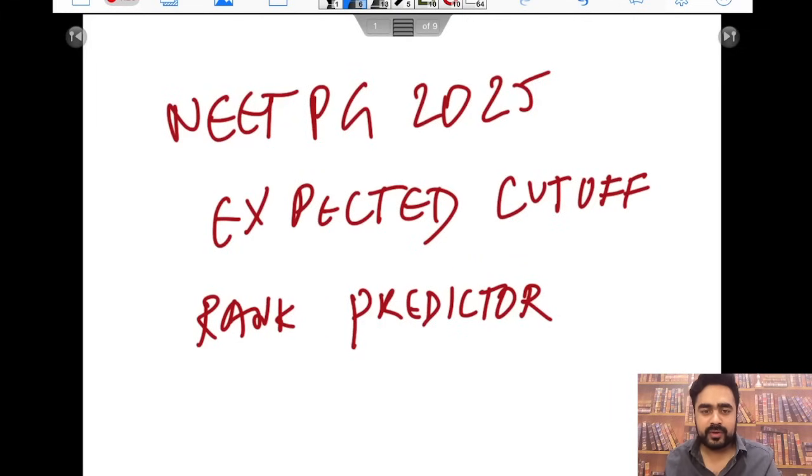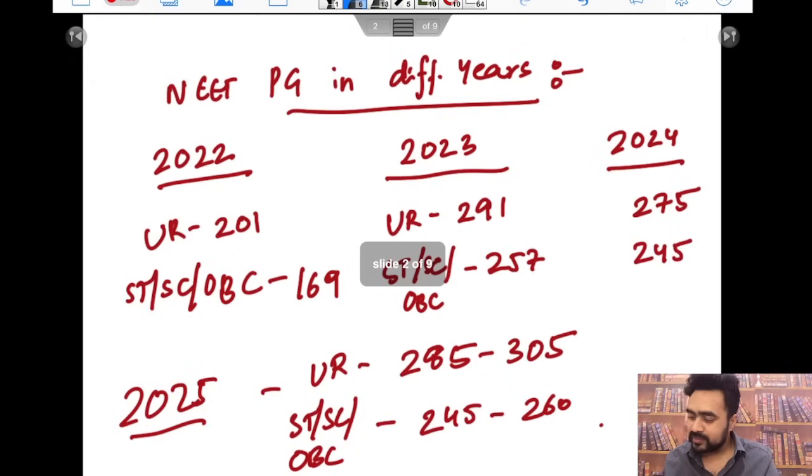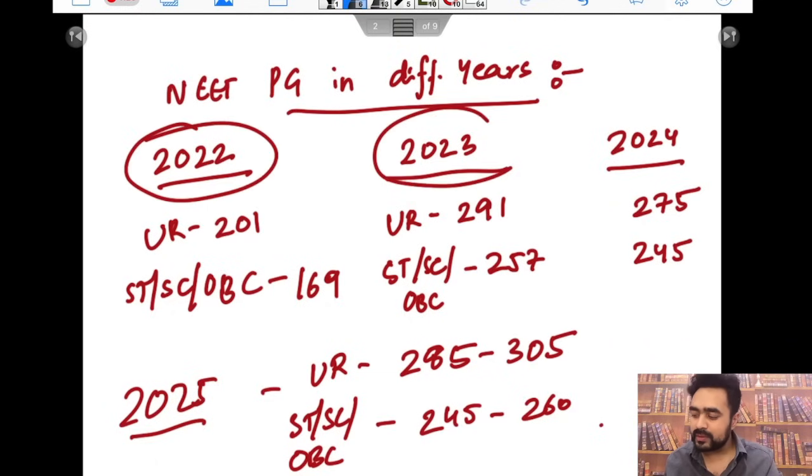Hello everyone, today we will be talking about NEET PG 2025 expected cutoff and the rank predictors. First of all, I will be talking about different years - I have compared 2022, 2023, and 2024. What was the cutoff levels? So for Unreserved in 2022 it was 201, and for ST/SC and OBC it was 169.